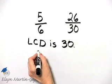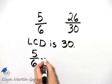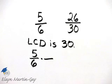let's work with the fraction 5/6. And I ask myself, what do I multiply the denominator of 6 by in order to have a denominator of 30?